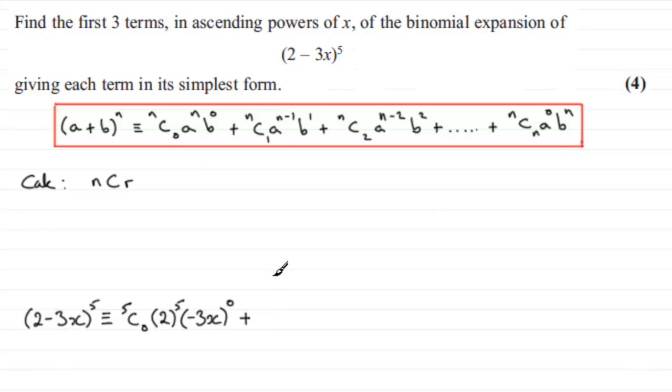Then we have plus, we move on to the next term, the second term, which is going to be nC1. For us it's going to be 5C1. 5C1. And then it's a, 2 for us. And we reduce the power by 1. So we have 5 there, we're now down to the power 4.